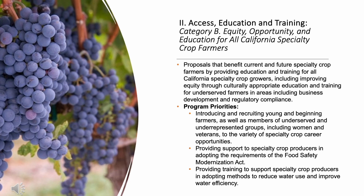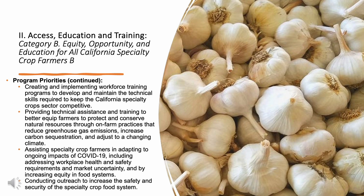Funding Category B in the access, education, and training funding area is Equity, Opportunity, and Education for All California Specialty Crop Farmers. Proposals submitted to this funding category should benefit current and future specialty crop farmers by providing education and training, including improving equity through culturally appropriate education and training for underserved farmers in areas including business development and regulatory compliance. There are seven program priorities in this funding category.